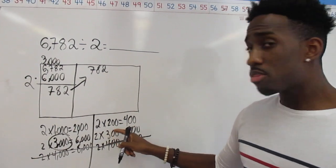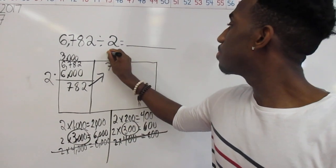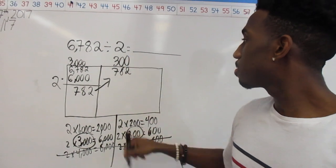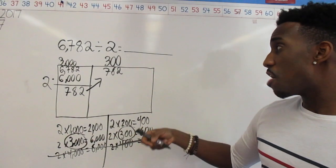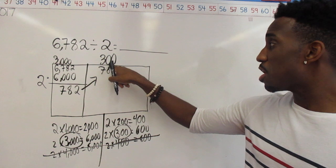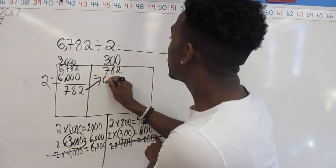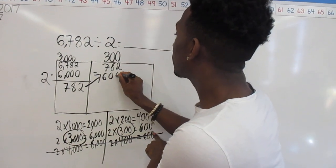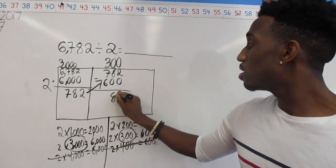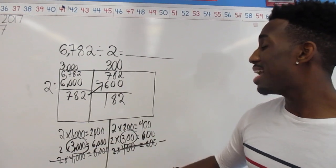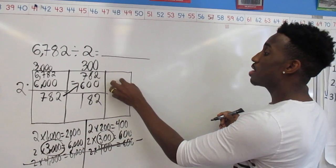The closest side length will be 300. So now I'm going to take away what I used: 300 times 2 is 600. I'm going to take away 600 because that's what I used. I have 182 left for this last part of the rectangle.